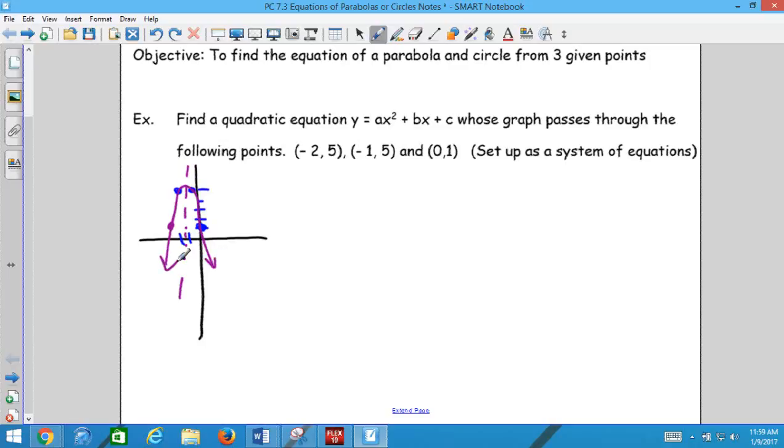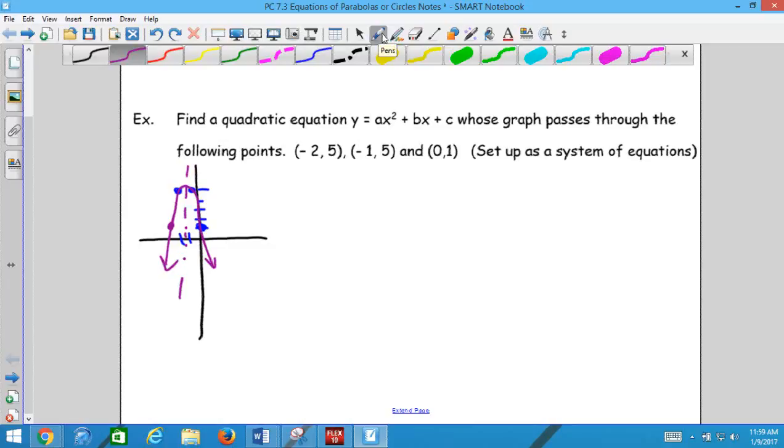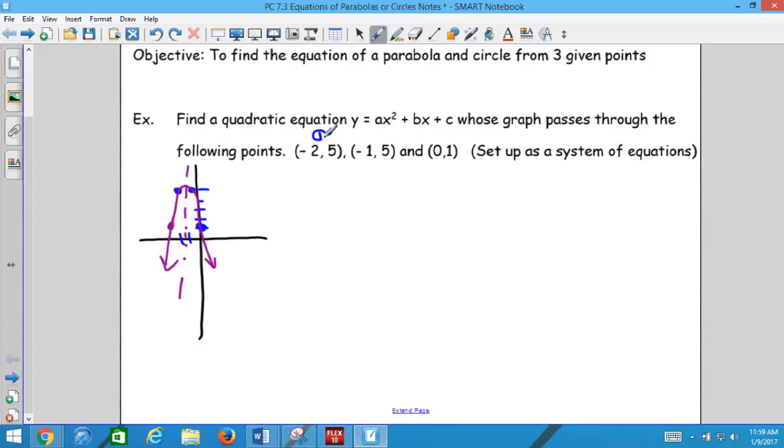In your assignment, it is going to ask you to graph it, which we can do now or we can do at the end. So we have three ordered pairs. The first ordered pair is going to give us equation one. The second ordered pair is going to give us equation two. And the third ordered pair is going to give us equation three. We're going to take each ordered pair one at a time and plug it into the formula for the quadratic function.